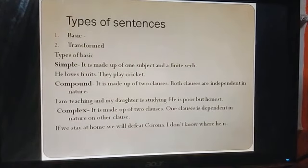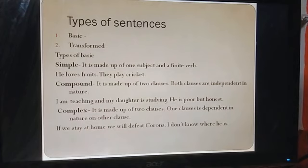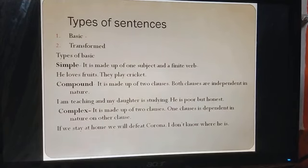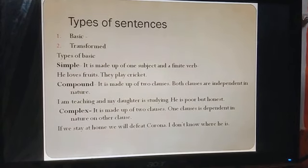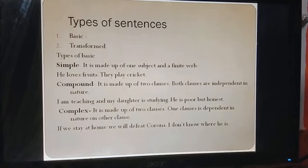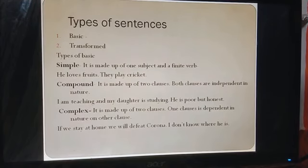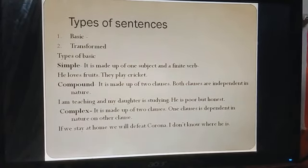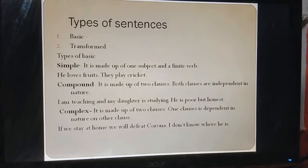Now we move on to our third type, that is complex sentence. इसमें भी दो या दो से ज़्यादा clauses हो सकते हैं, but one clause is dependent in nature on the other clause. इसमें एक subordinate clause होता है और एक principal clause होता है, और subordinate clause meaning के लिए principal clause पर depend करता है। जैसे: 'If we stay at home, we will defeat corona' — यहाँ 'we will defeat corona' principal clause है और 'if we stay at home' subordinate clause है। दूसरा example: 'I don't know where he is.'